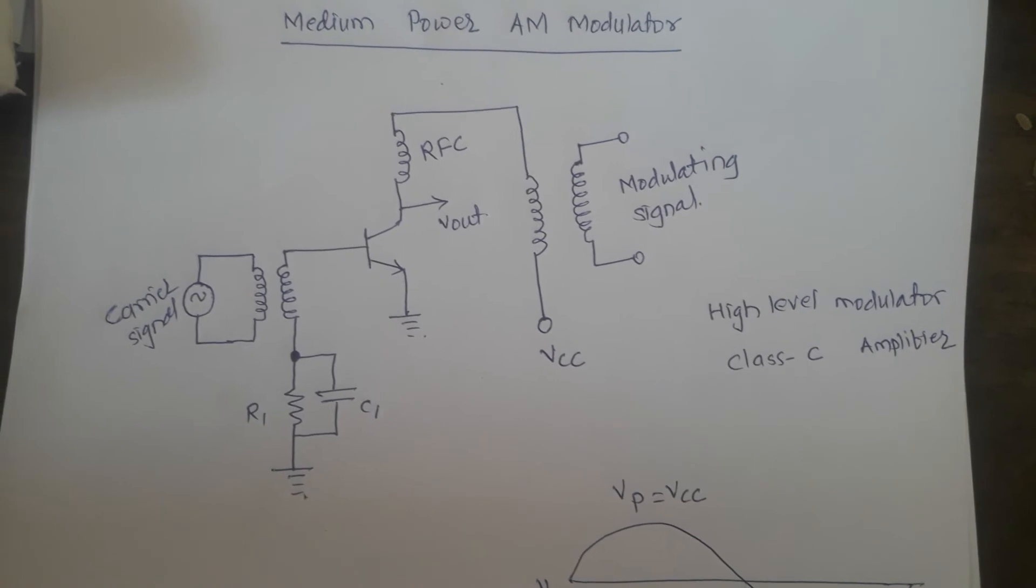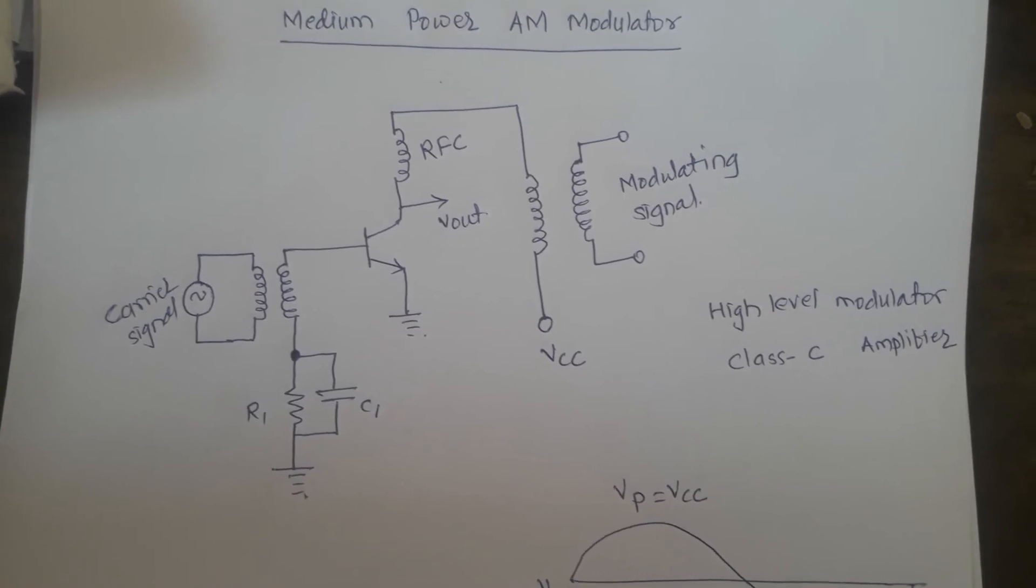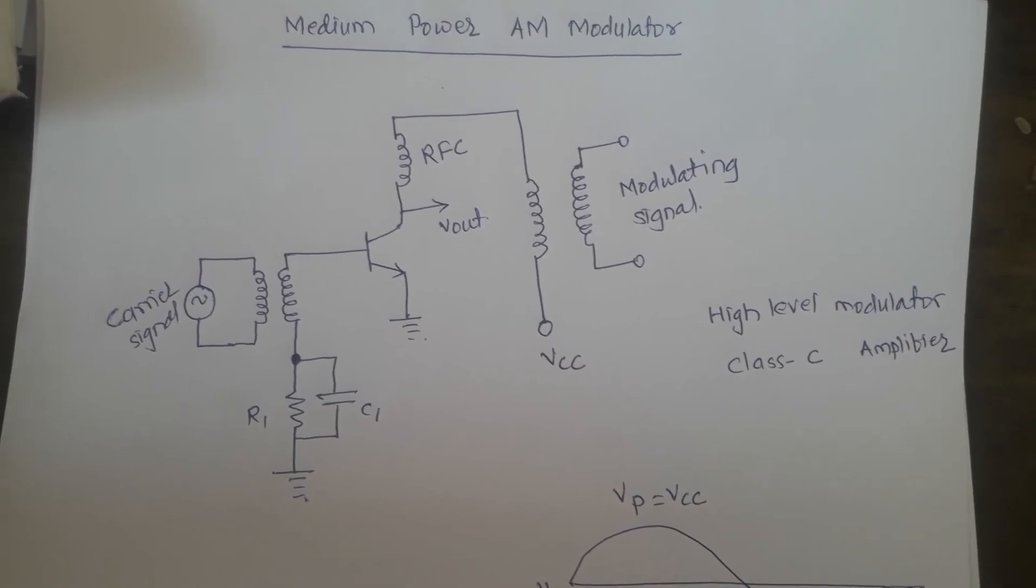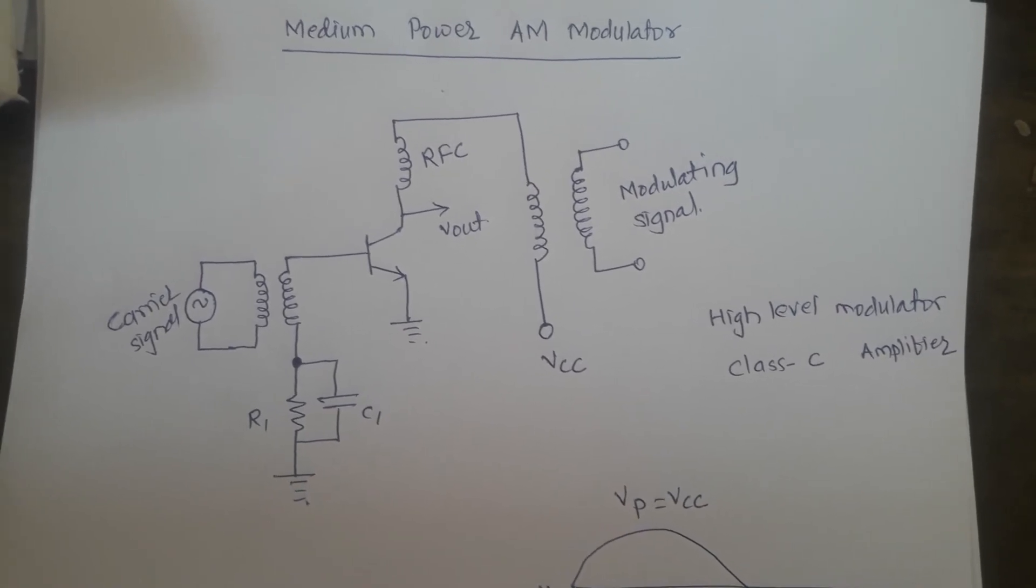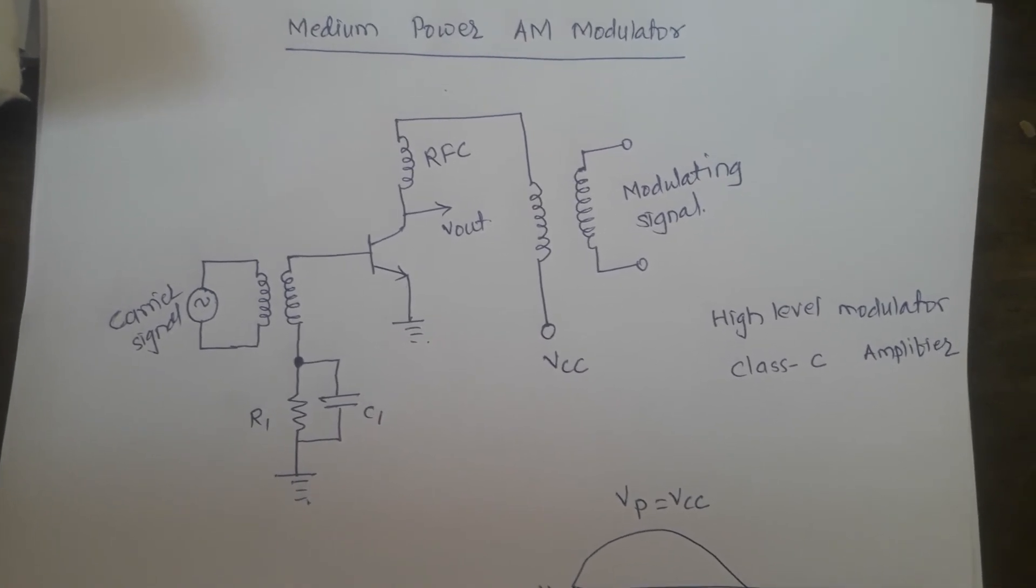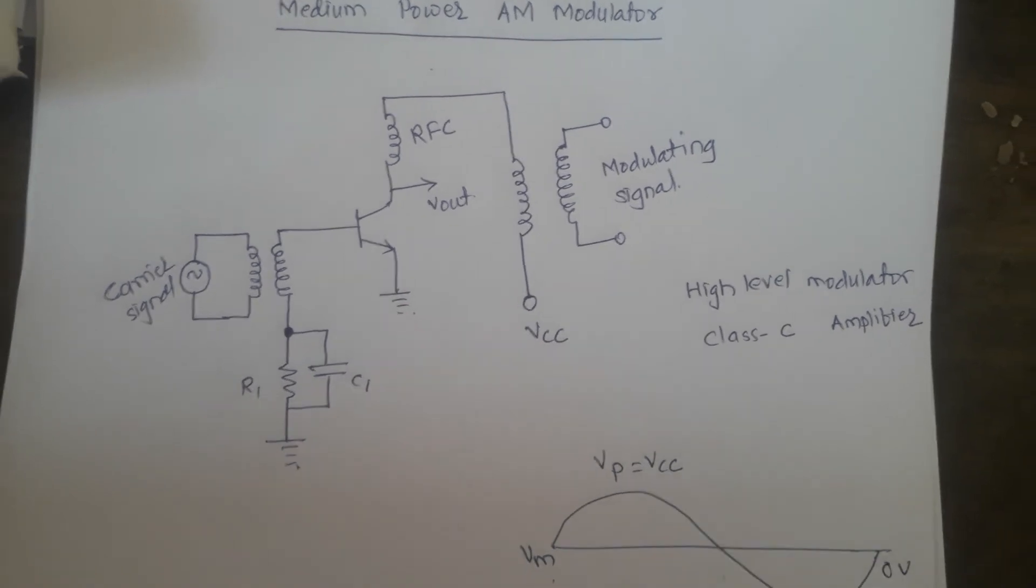It will block the DC and open circuit for the higher frequencies. The job of RFC is to isolate DC power supply from the carrier and the sideband but also allow the DC and the low power modulating signal to pass through it as shown in the figure.